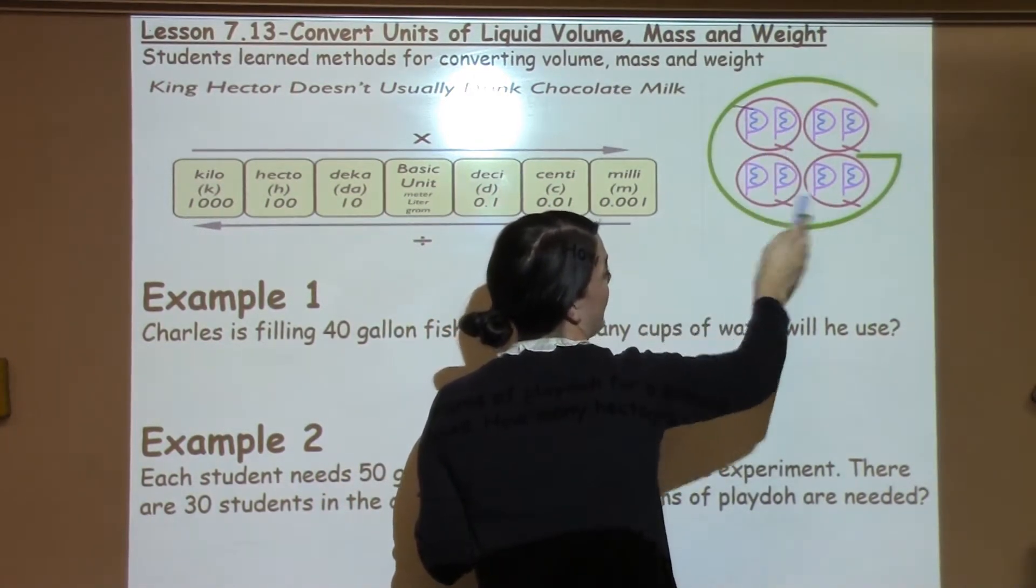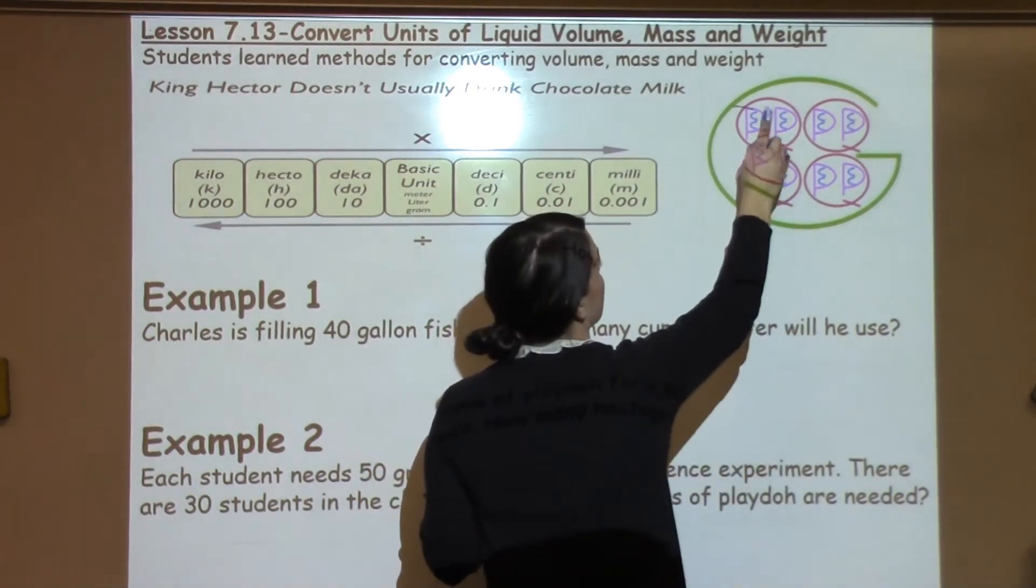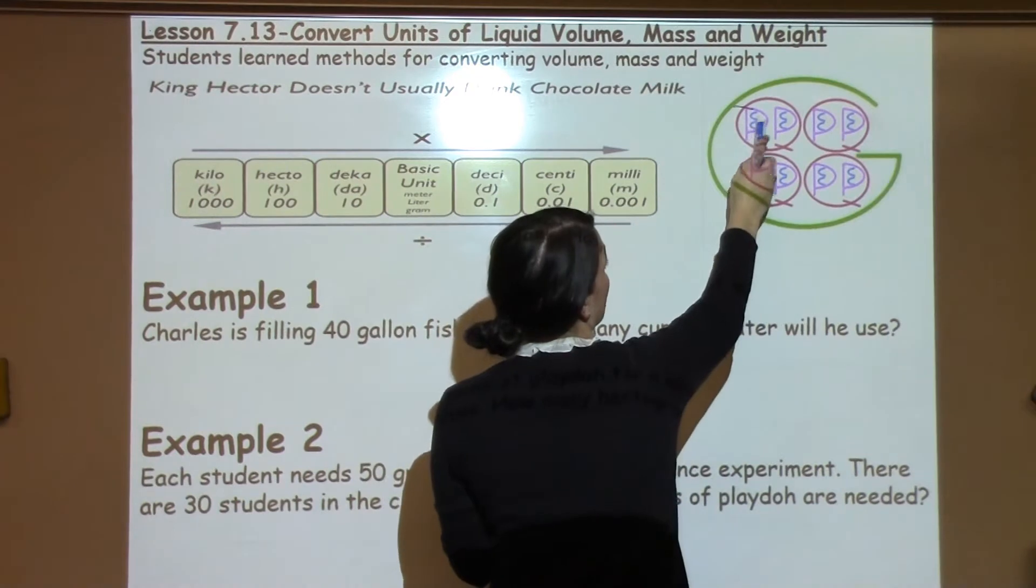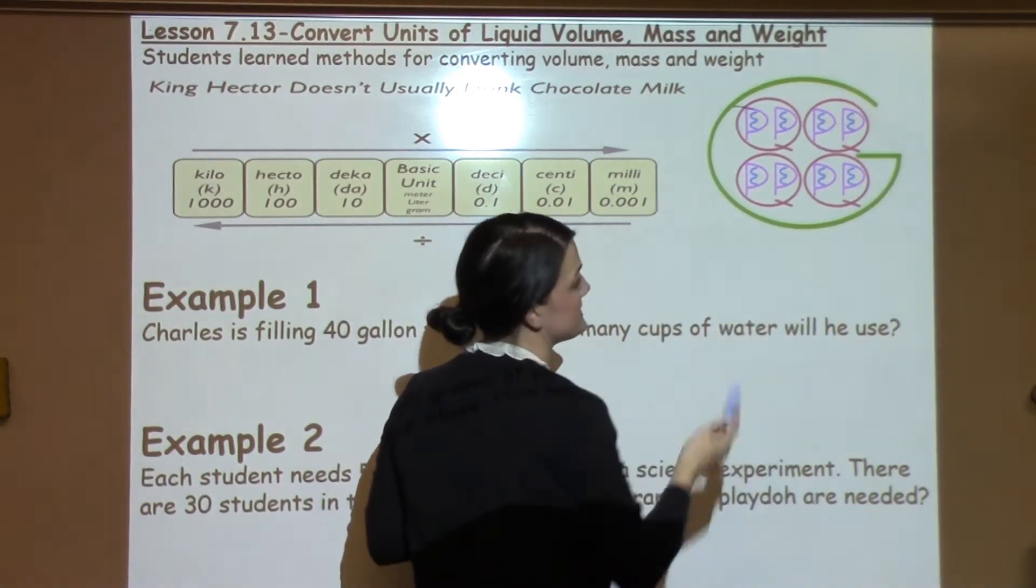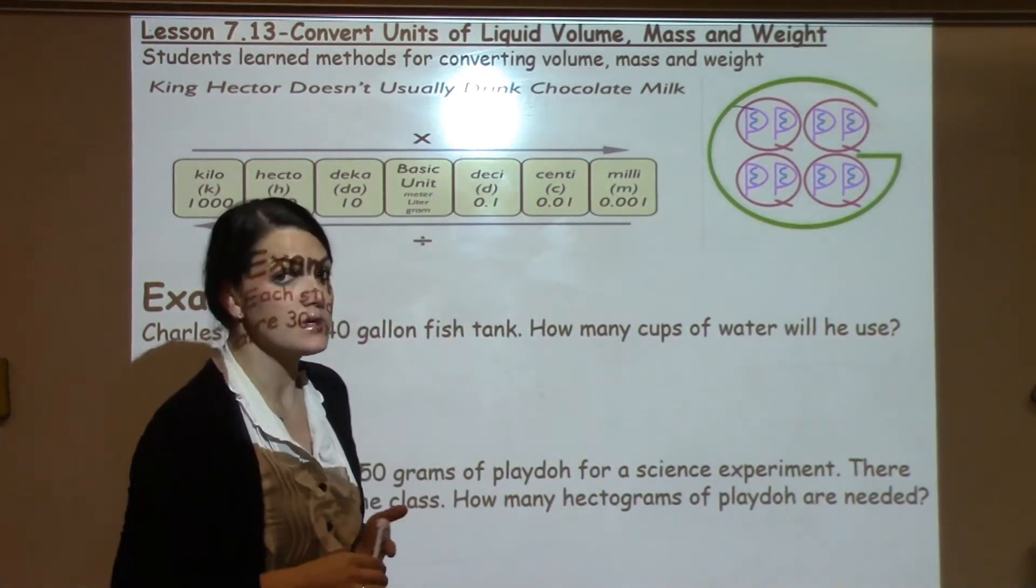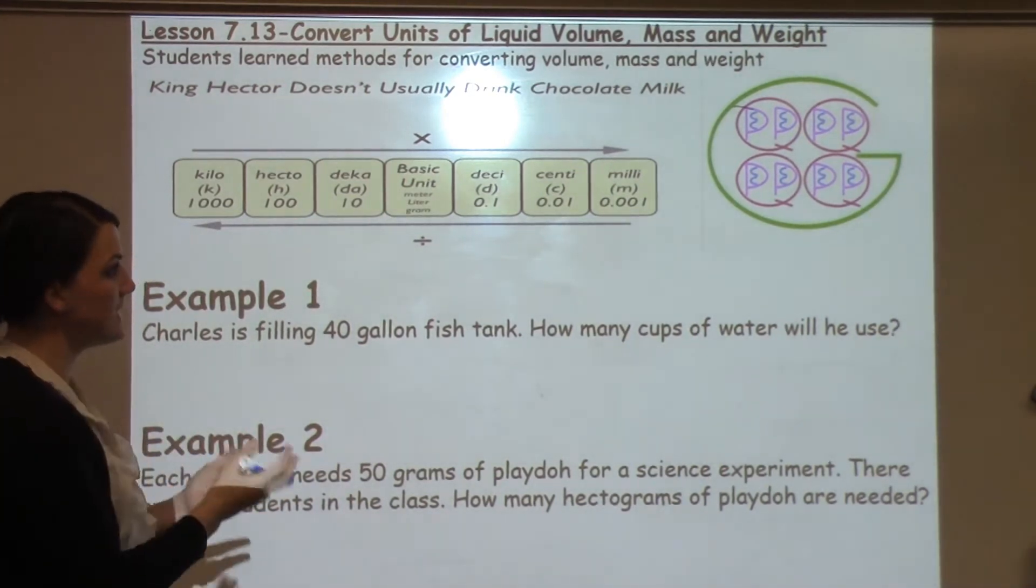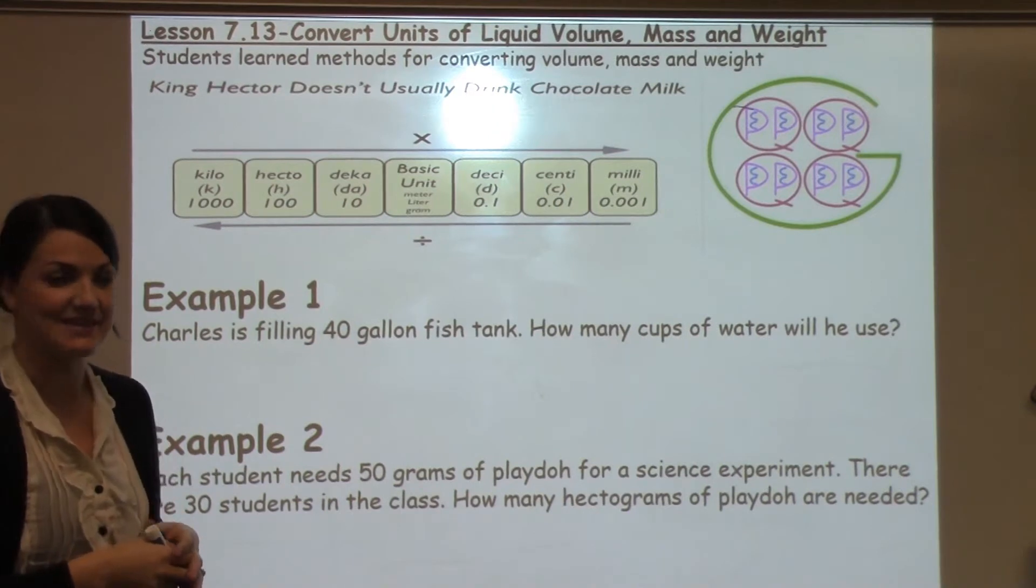Which means that there are eight pints in a gallon, and then there are two cups in every pint, which means that there are four cups in a quart and 16 cups in a gallon. It gives you a lot of information just in that one small drawing that we learned in fifth grade and then we'll use again in sixth grade this year.